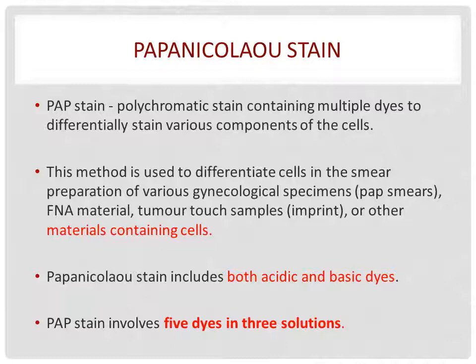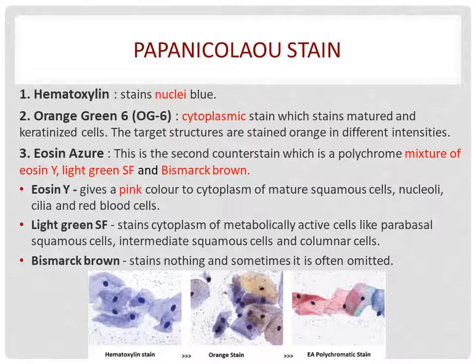The Papanicolaou stain includes both acid and basic dyes and has 5 dyes in 3 solutions. The first solution is hematoxylin, which stains the nucleus blue. The second is Orange G (OG6), a cytoplasmic stain which stains mature and keratinized cells, with target structures stained orange in different intensities. The third solution is Eosin-Azure, which is a mixture of Eosin White, Light Green SF, and Bismarck Brown.